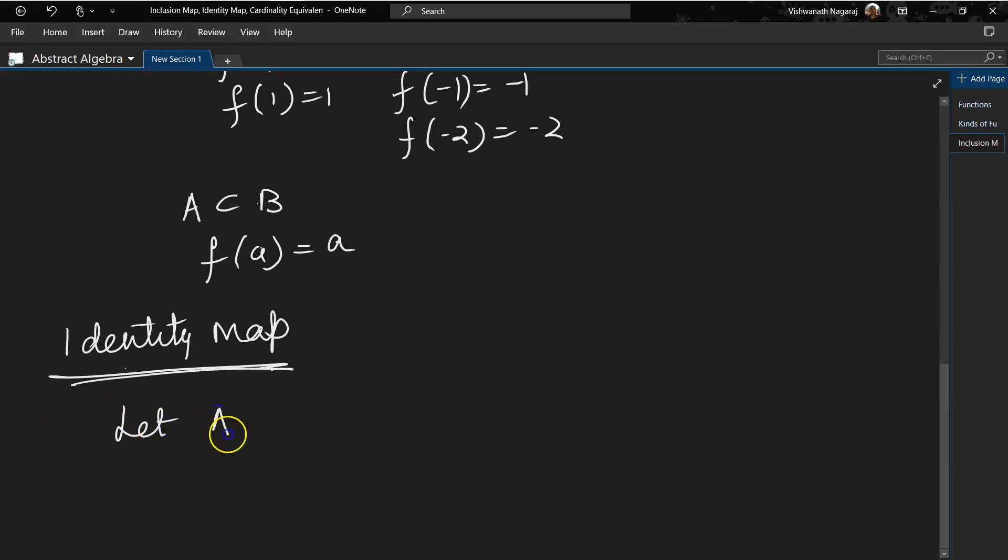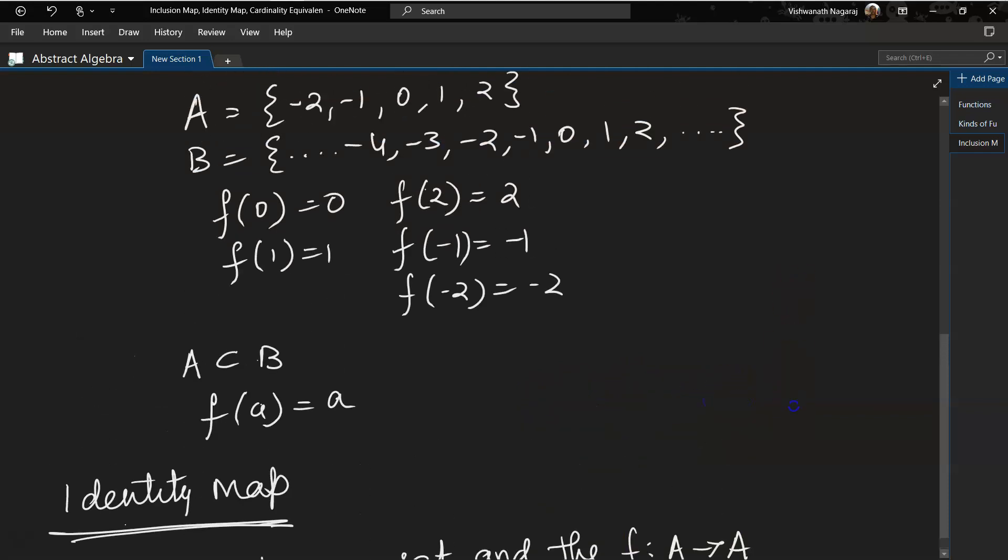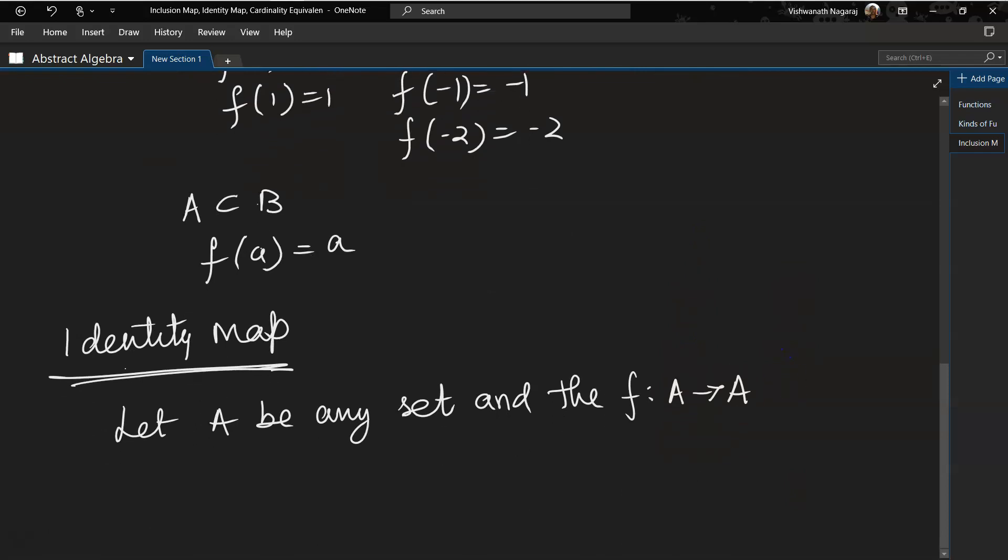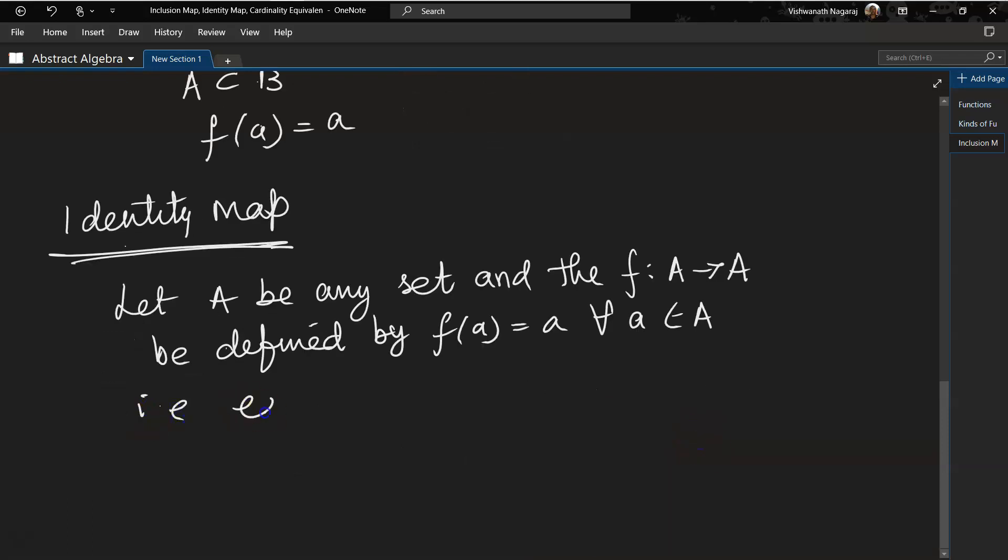Now I think you got the idea of inclusion map. Now let's look at identity map. What's identity map? Let A be any set and the function from A to A, in inclusion map it was A to B, here it is A to A, be defined